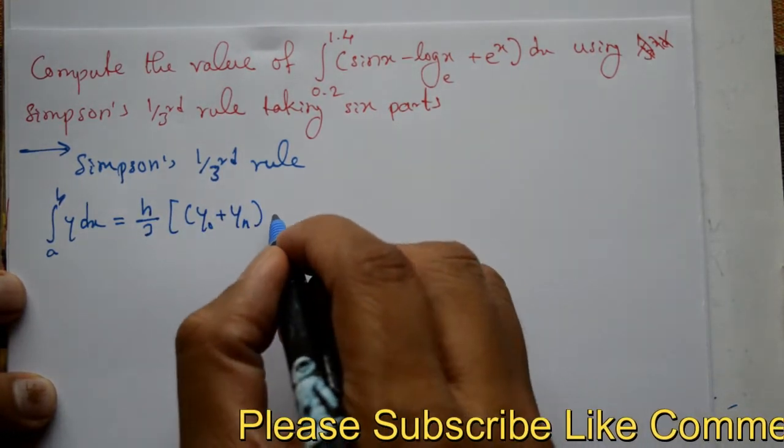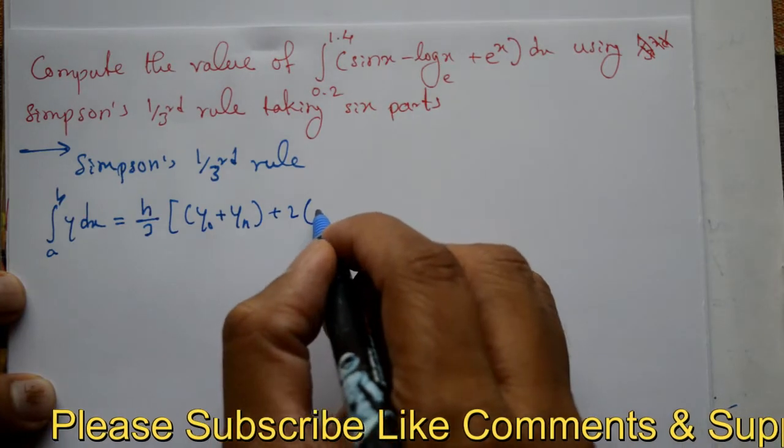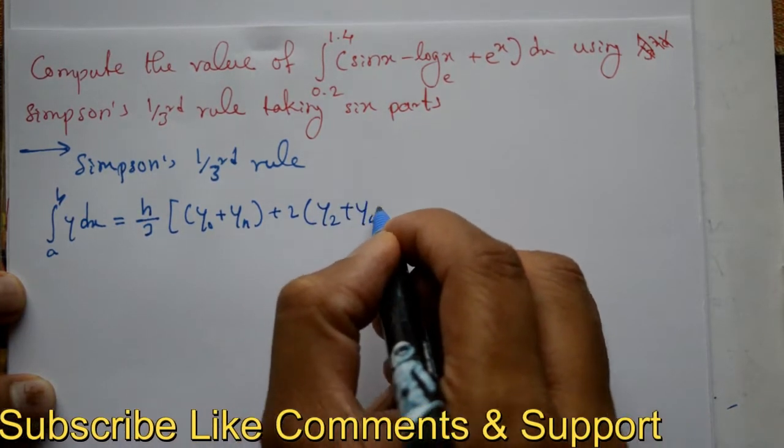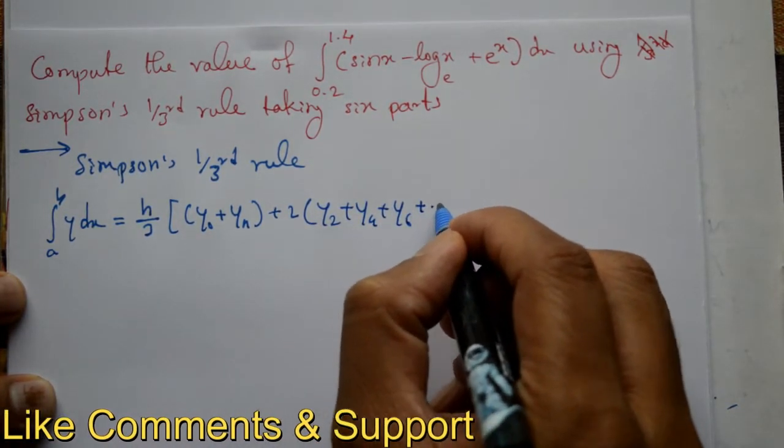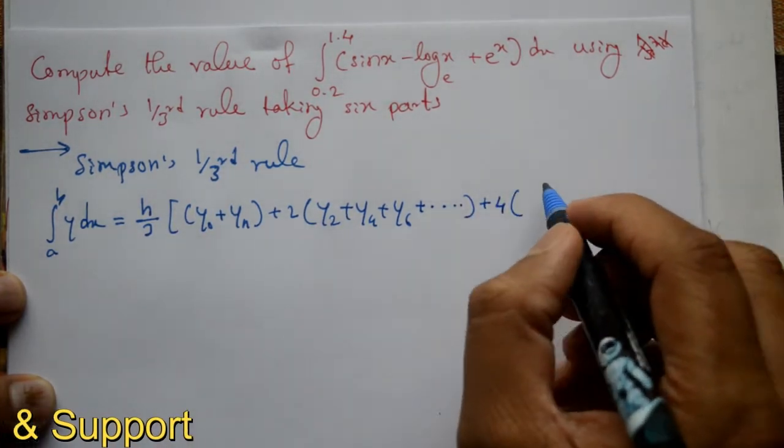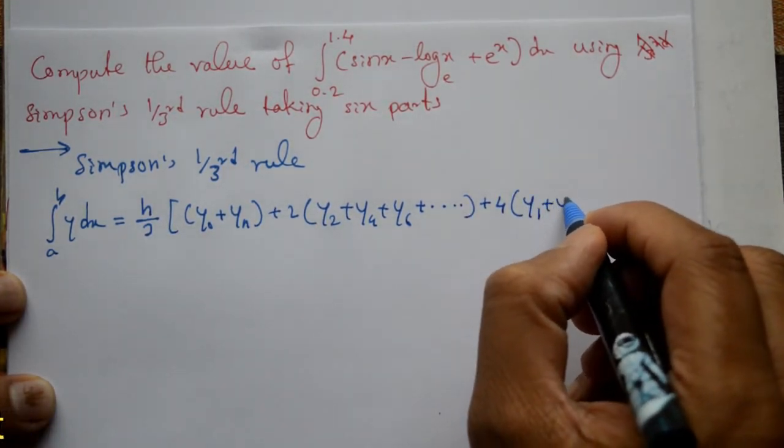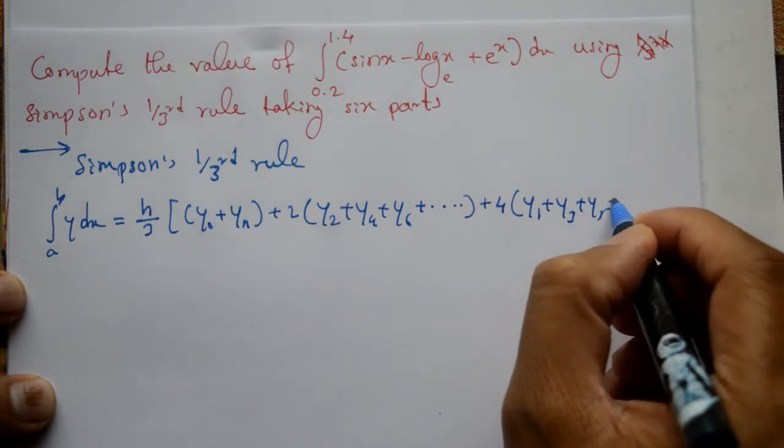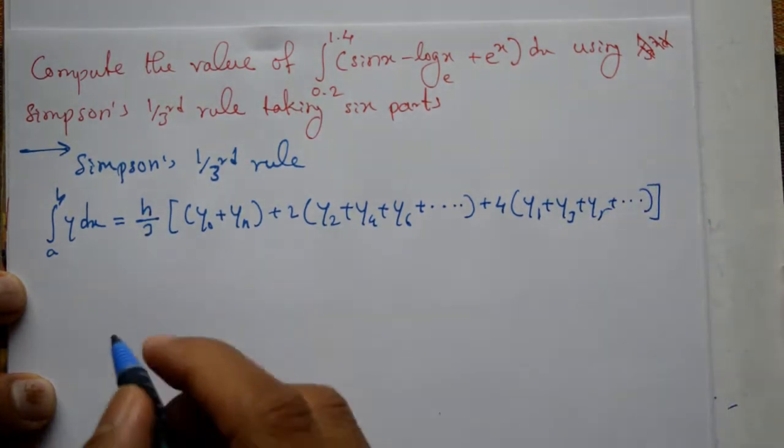plus 2 into even numbers, plus 4 into odd numbers, that is y1 plus y3 plus y5 and so on.